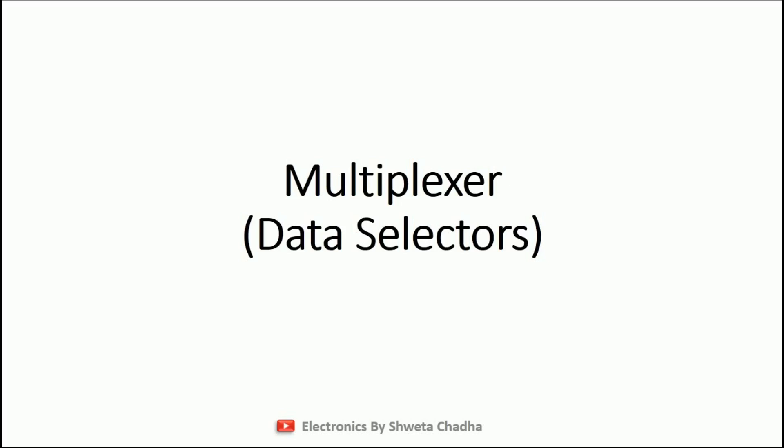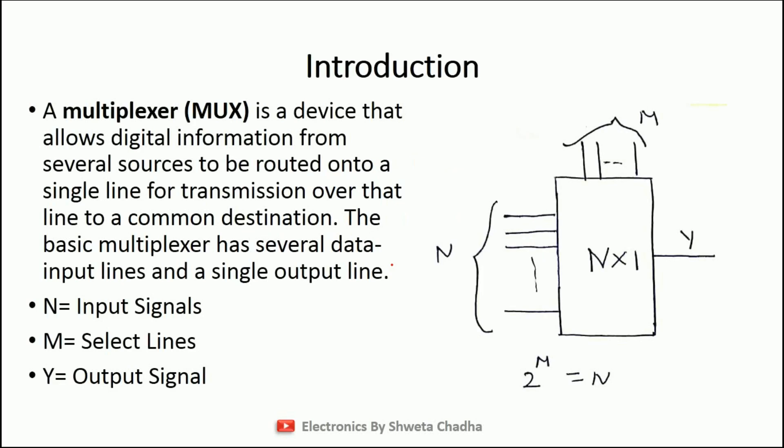Hello students. In this video I am going to talk about the combinational circuit that is multiplexer. Multiplexer is also known as data selector or commonly known as MUX. A multiplexer is a device that allows digital information from several sources to be routed onto a single line for transmission over that line to a common destination.